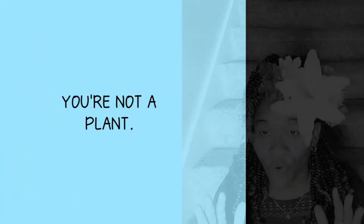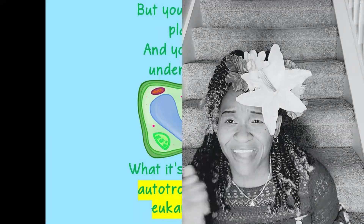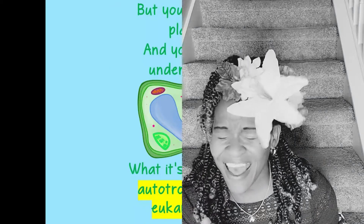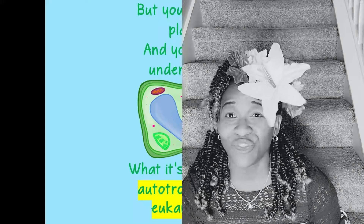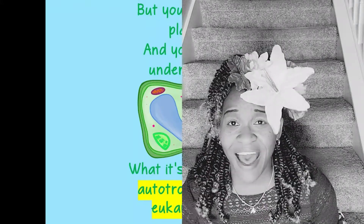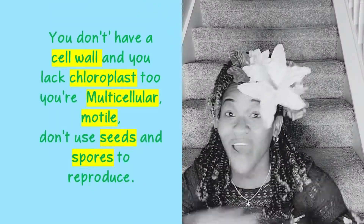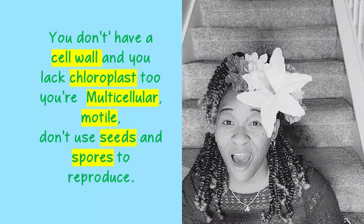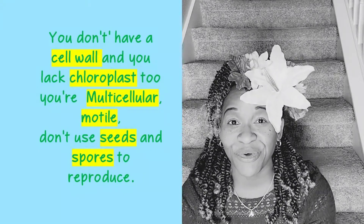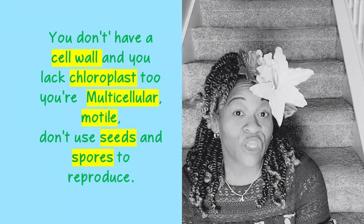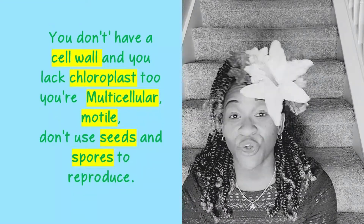But you're not a plant, and you don't understand what it's like to be autotrophic and eukaryotic. You don't have a cell wall, and you lack chloroplasts too. You're multicellular and motile — you don't use seeds or spores to reproduce.